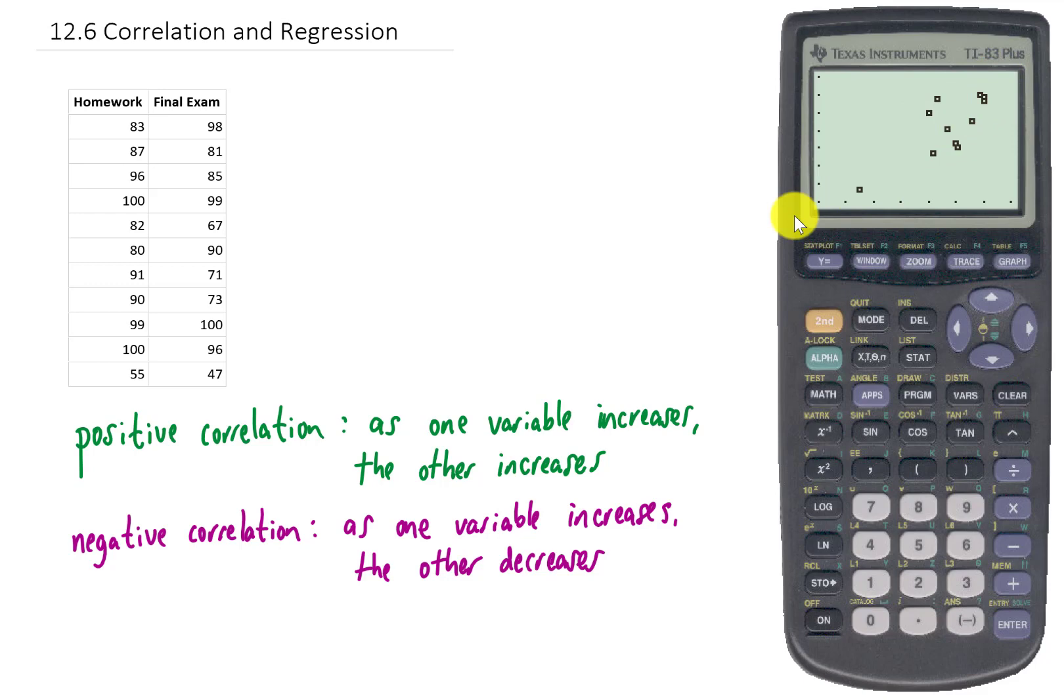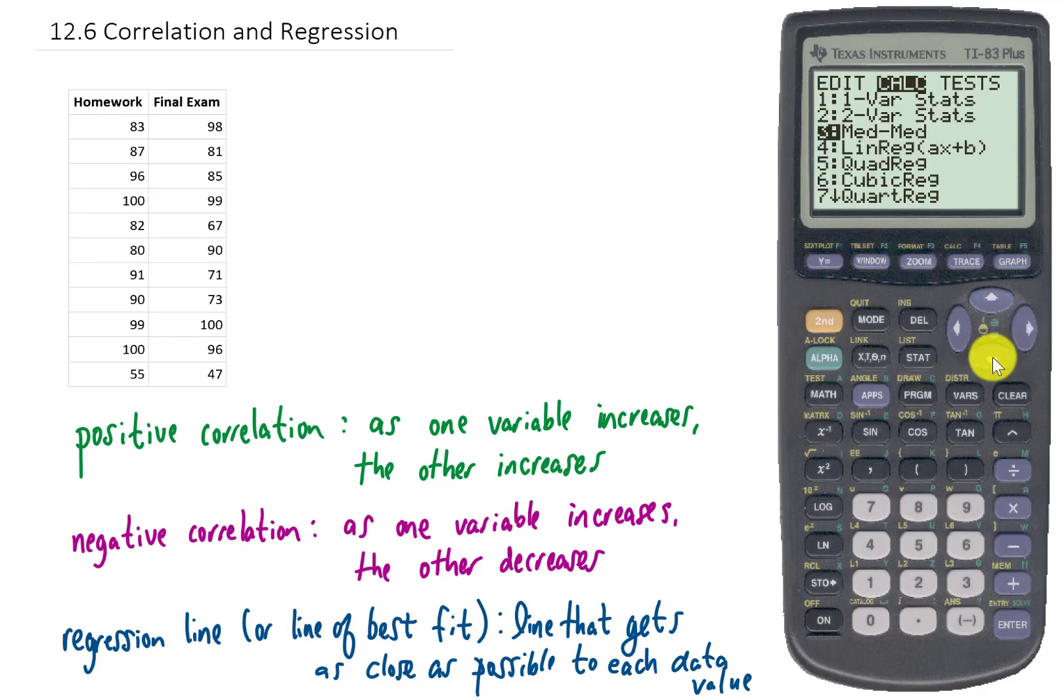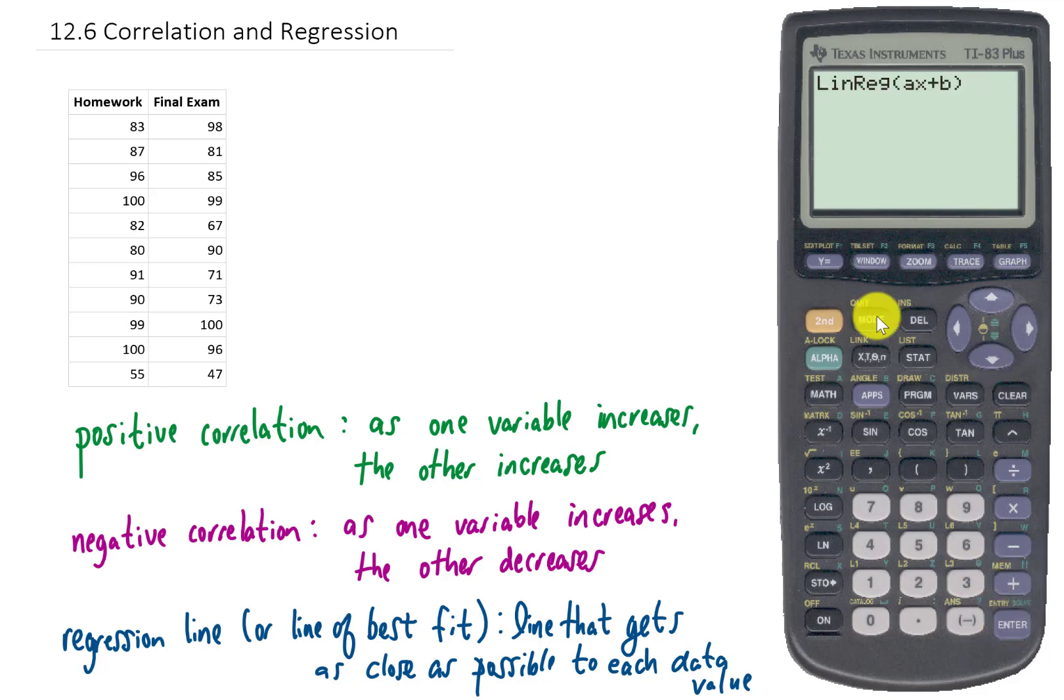We call that a best fit line or a regression line. Now the calculator can find that regression line or line of best fit for us. We can click Stat, we can arrow to the right to get the calc, and we can go to Option 4, which is the linear regression option. We can click Enter on this. And I'm going to do a little bit of a trick. I'm going to tell the calculator to stick the equation for this line into my Y equals section of the calculator.